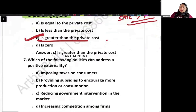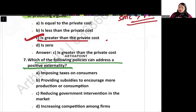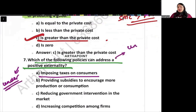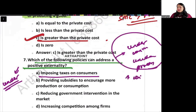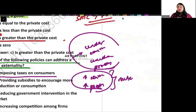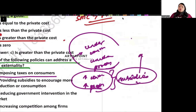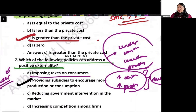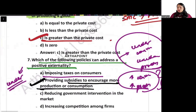Which of the following policies can address positive externality? Imposing a tax on consumers would not work for positive externality. In positive externality, there is under-consumption or under-production. So in this case, what we have to do is increase consumption or increase production. And how can we do that? By giving subsidies — and we call those Pigovian subsidies. So the answer is B: providing subsidies to encourage more production or consumption.